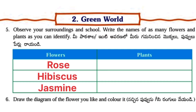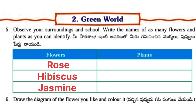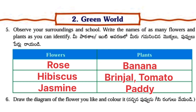Next, observe your surroundings and school. Write the names of as many flowers and plants as you can identify. Flowers: rose, hibiscus, jasmine. Plants: banana, brinjal, tomato, paddy. These are our surrounding flowers and plants.